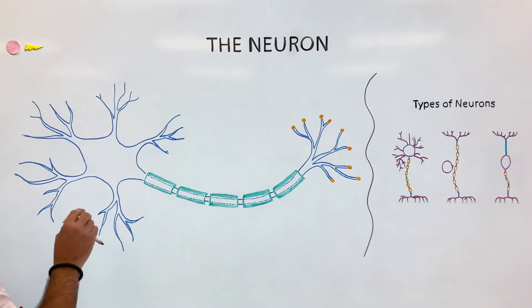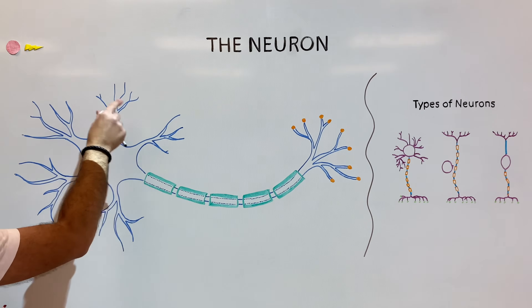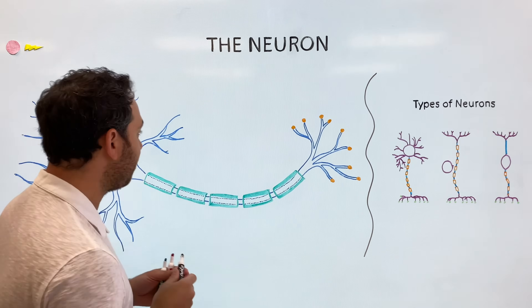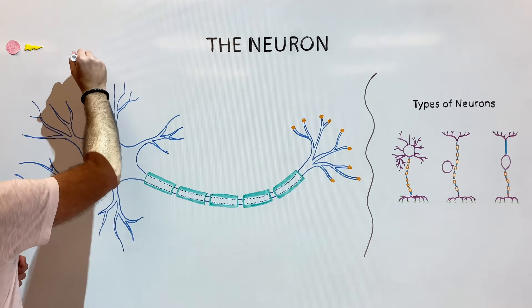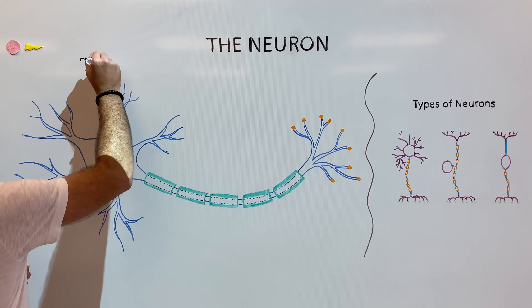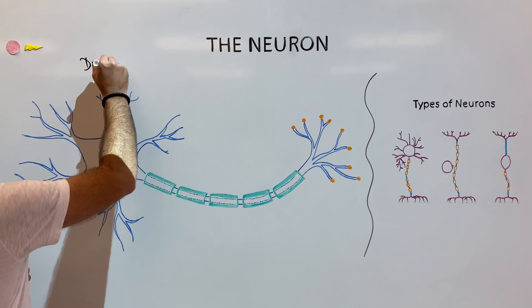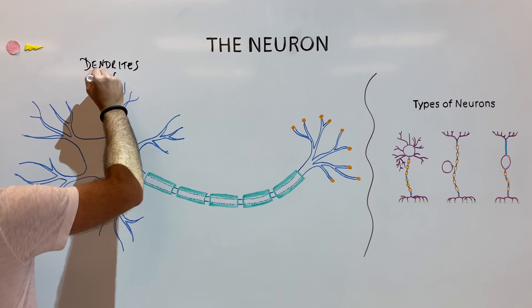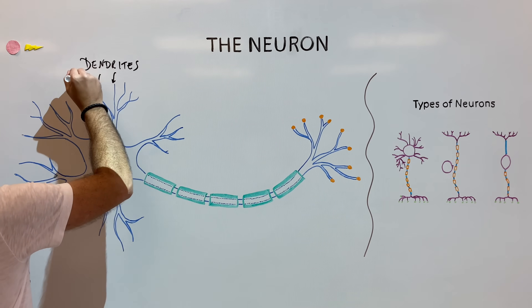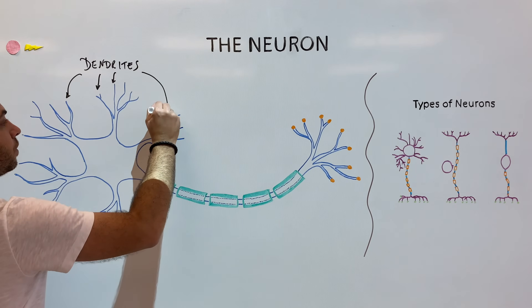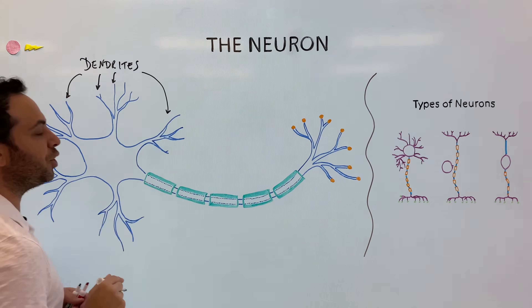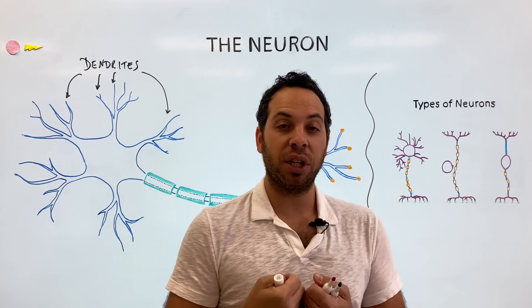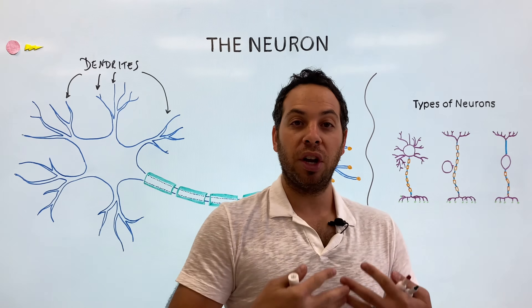The first structure to focus on are these little branches here — it's almost like the little fingers on a hand. These are called dendrites. All of these little branches are dendrites. What do dendrites do? Dendrites receive the message from another neuron.